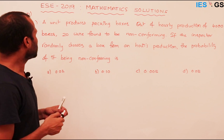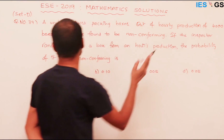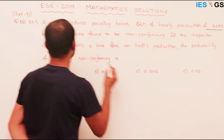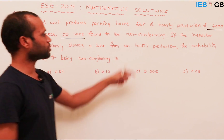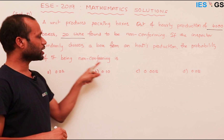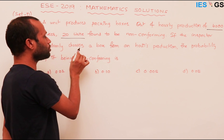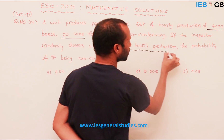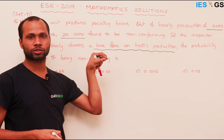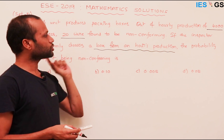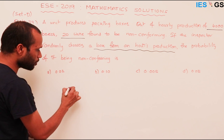Question 39: A unit produces packing boxes. Out of hourly production of 4000 boxes, 20 were found to be non-conforming. If the inspector randomly chooses a box from an hour's production, the probability of it being non-conforming is what? The inspector is randomly choosing a box from one hour's production.